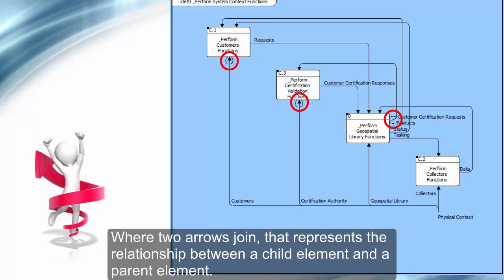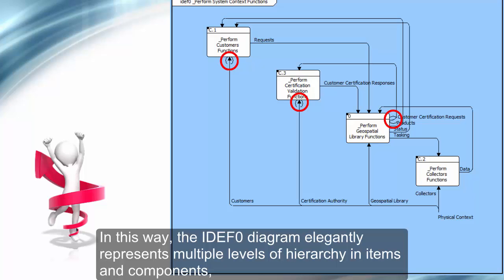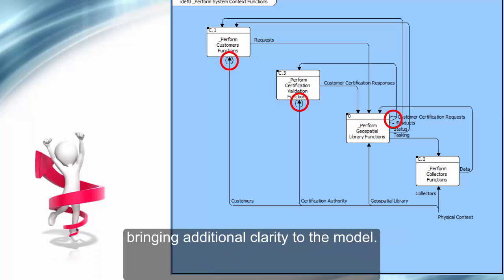Where two arrows join, that represents the relationship between a child element and a parent element. In this way, the IDEF0 diagram elegantly represents multiple levels of hierarchy in items and components, bringing additional clarity to the model.